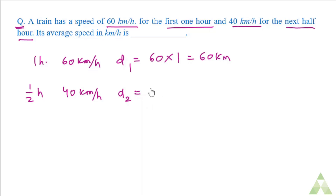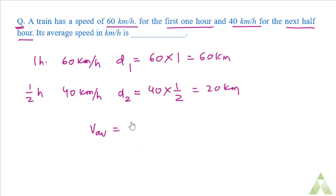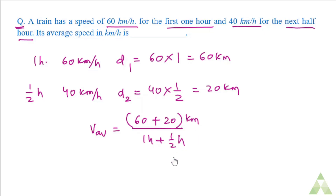The second distance D2 is speed into time, which is 40 km/h into 0.5 hour, giving 20 km. From this information, we can directly calculate average speed as total distance covered — 60 plus 20 equals 80 km — divided by total time taken, which is 1 hour plus half an hour. This comes out to be 160/3 km per hour.